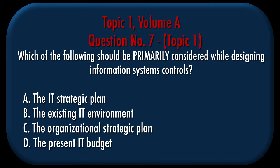Question number 7, Topic 1. Which of the following should be primarily considered while designing information systems controls? A. The IT strategic plan. B. The existing IT environment. C. The organizational strategic plan. D. The present IT budget.